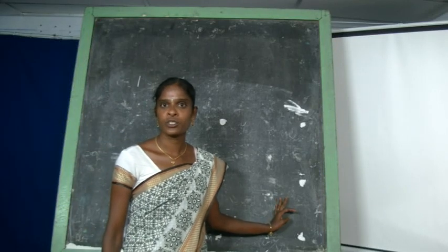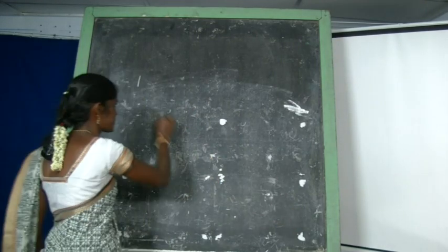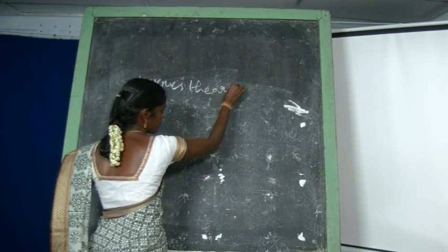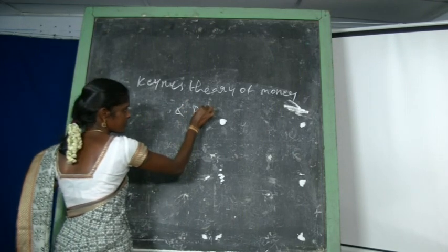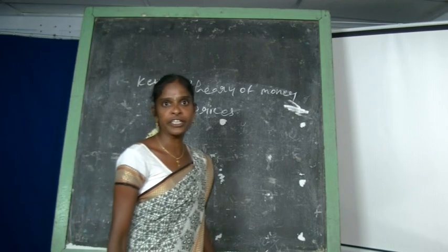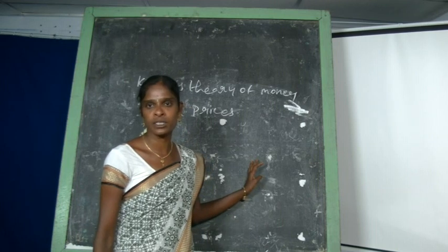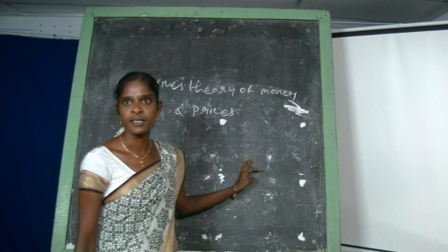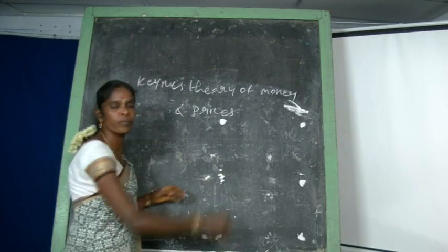Good afternoon to all present here. Today I am going to discuss the topic: Keynes's theory of money and price. The traditional quantity theory of money does not explain how changes in the supply of money bring about changes in the price level. Keynes tried to rectify these defects and introduced a new theory, known as Keynes's theory of money and prices.